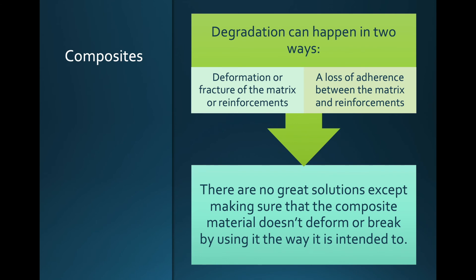Then we have composites. Composites are made of two parts — a matrix and a reinforcement — two substances combined to create a superior material by using the strengths of each. The problems are that composites can deform or fracture, affecting the matrix or the reinforcement, or there can be a loss of adherence where the matrix and reinforcement no longer stick together. Unfortunately there's no great solution — the best we can do is ensure composites are kept away from environmental conditions that would cause these fractures or loss of adherence.